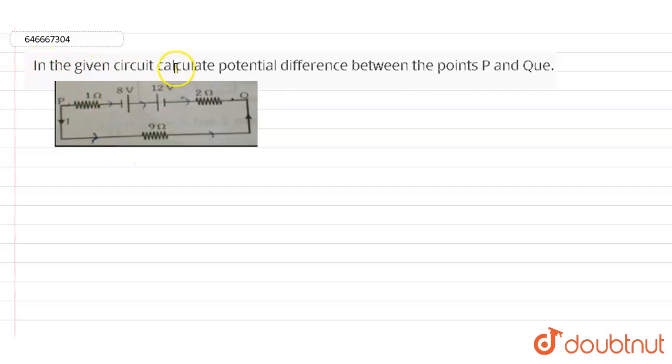It is given that in the given circuit, calculate the potential difference between the points P and Q. So here we need to find out the potential difference between the points P and Q in this circuit.